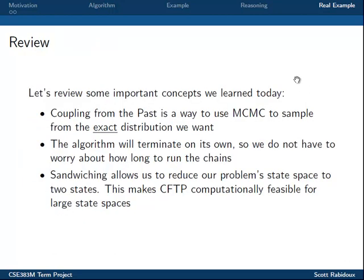We've learned a lot of information today, so let's review some key points. Coupling from the Past is a Markov Chain Monte Carlo algorithm that allows for perfect sampling from a desired distribution. With Coupling from the Past, there is no concern over when the algorithm should stop, since it does so automatically whenever the chains converge. Sandwiching, which requires some extra conditions, allows us to drastically reduce our problem's state space, which can make impossibly large problems much easier to deal with computationally.